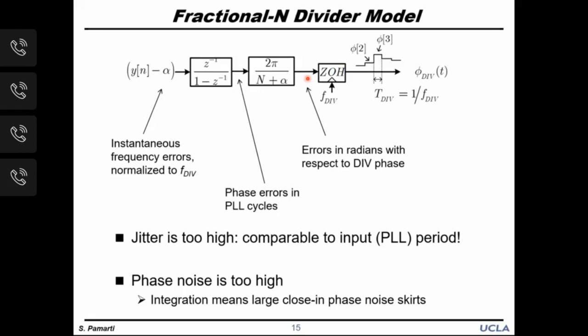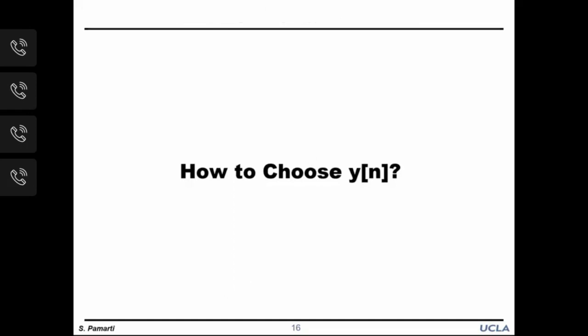The jitter is too high — comparable to the input PLL period, which is very large. Accordingly the phase noise is also very high. Furthermore, the integration means there are very large close-in phase noise contributions. Now we have a model of dynamic frequency division and the resulting phase noise, but we have not talked about how to choose y[n]. All we said is that y[n] has the desired average value alpha. So let's focus on how to choose y[n] and what our options are.